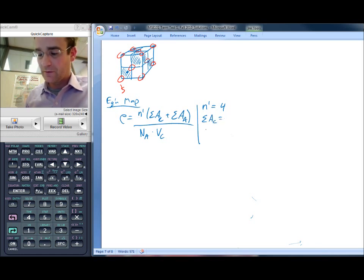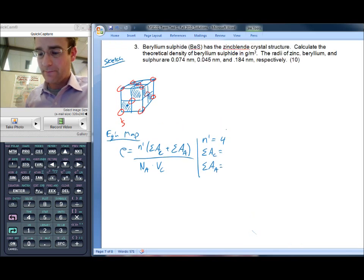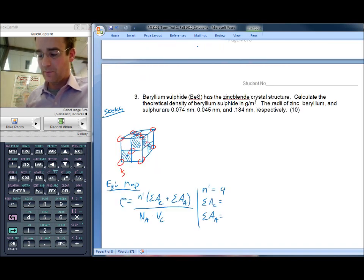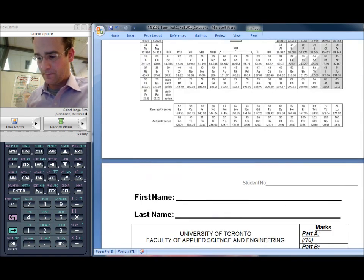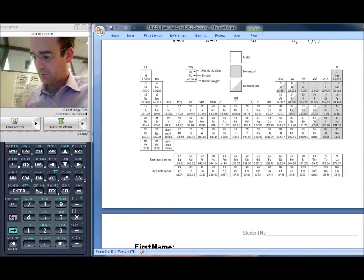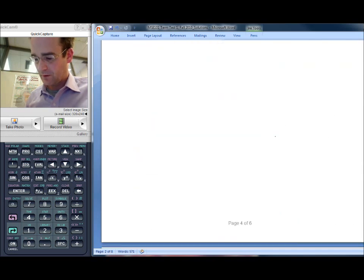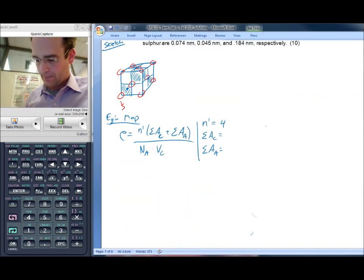And the sum of the atomic weights of the anions, that's just the atomic weight of sulfur. Because there's only one sulfur and one beryllium in each structure. So let's just quickly look that up. Go up to our periodic table. And we'll see that sulfur is 32.064, 32.064 grams per mole.